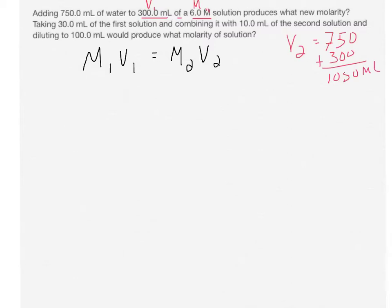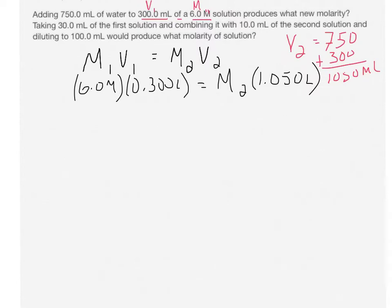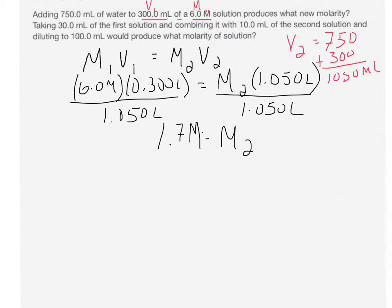So let's plug our values in. We're just going to divide by the 1.050 liters. If we do both sides by that, we end up with an answer of M2 being equal to 1.7 molar. That's the first question, the answer to the first question.